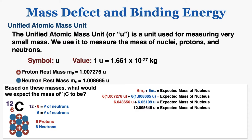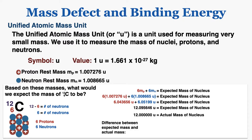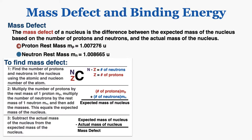The strange thing — and the theme of this lecture — is that the expected mass is not actually the mass of the nucleus. For carbon-12 the actual mass of the nucleus is 12.000000u. So some mass is missing: there is less mass in the nucleus than the mass of the individual protons and neutrons that make it up. The missing mass is 0.095646u, and this is what I would call the mass defect of the nucleus — the difference between the expected mass and the actual mass.